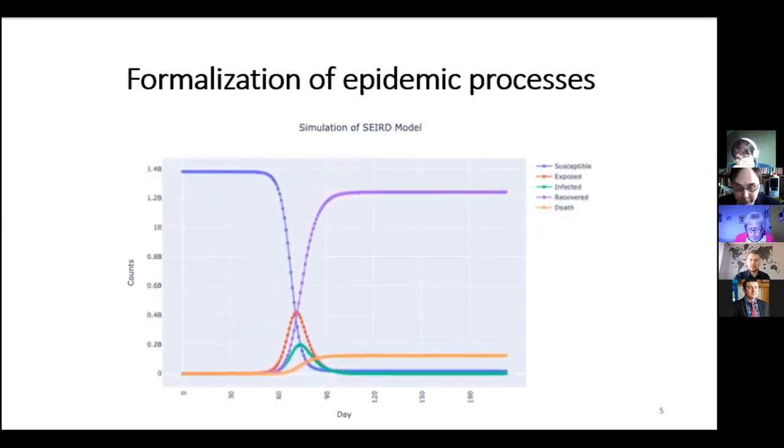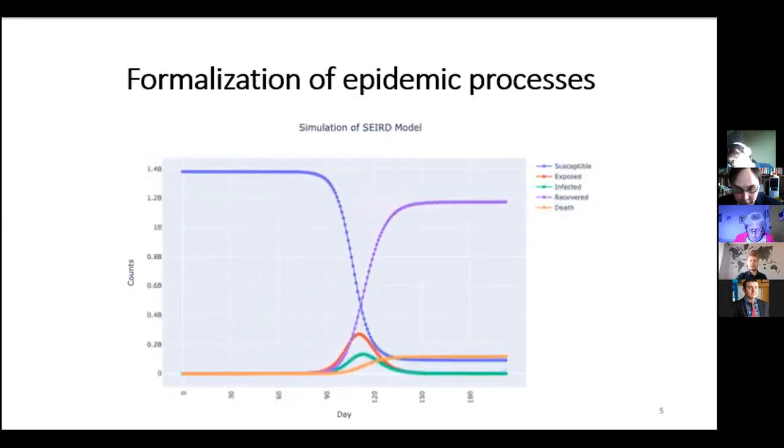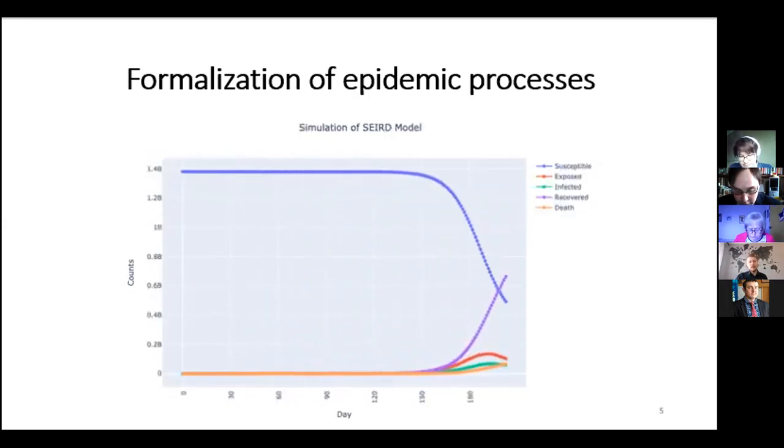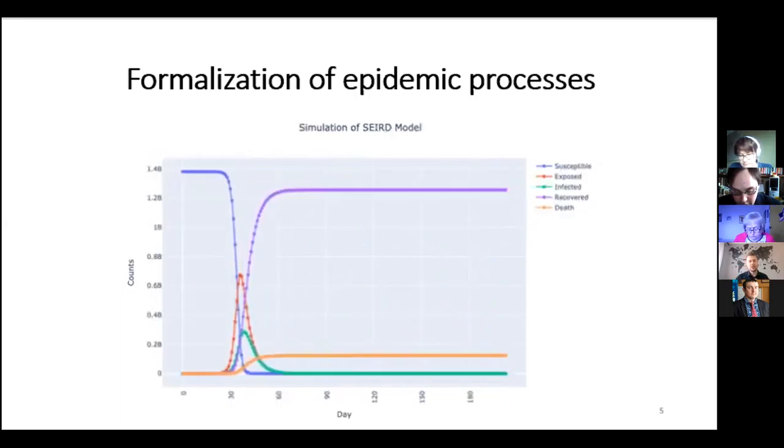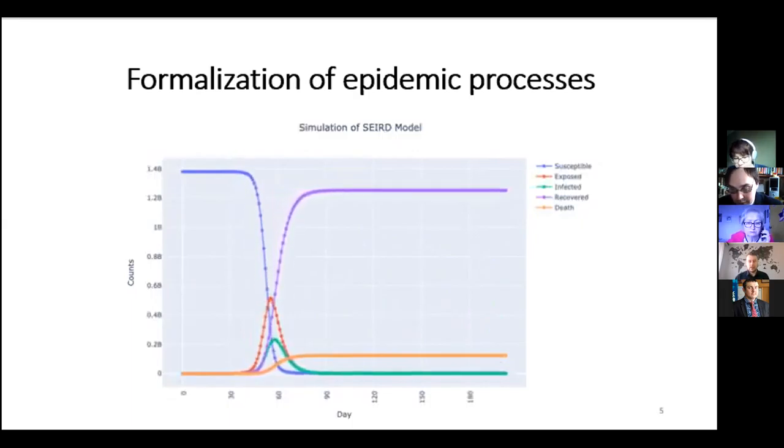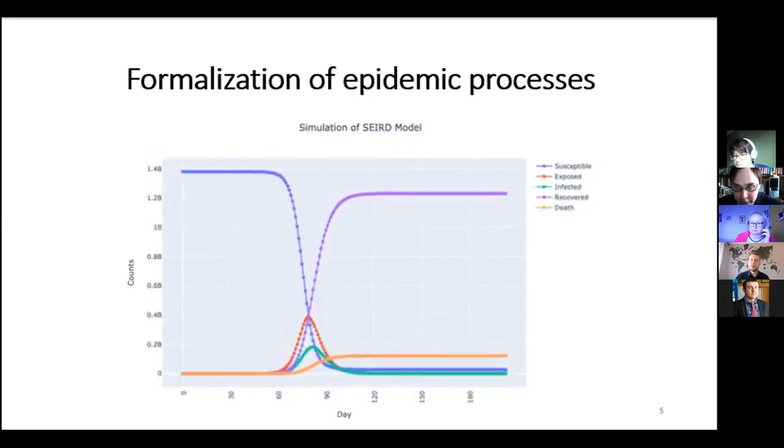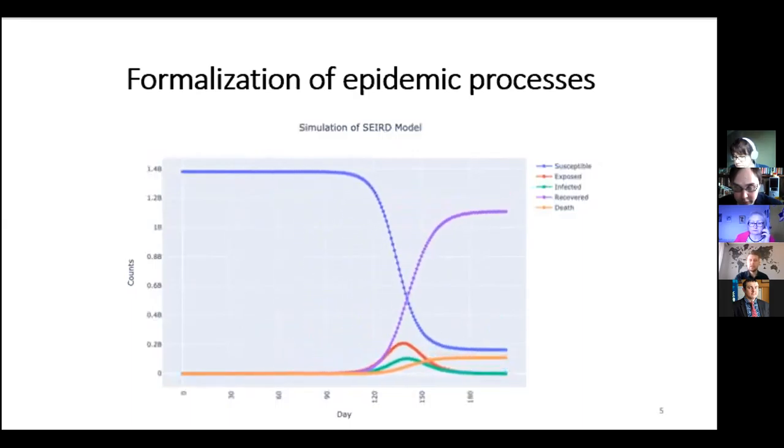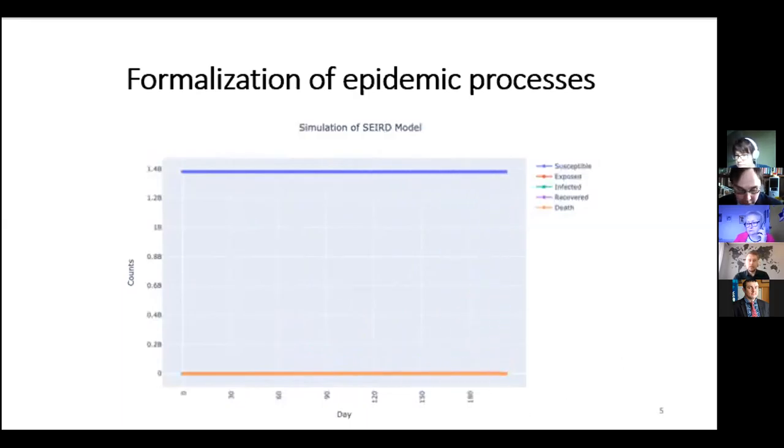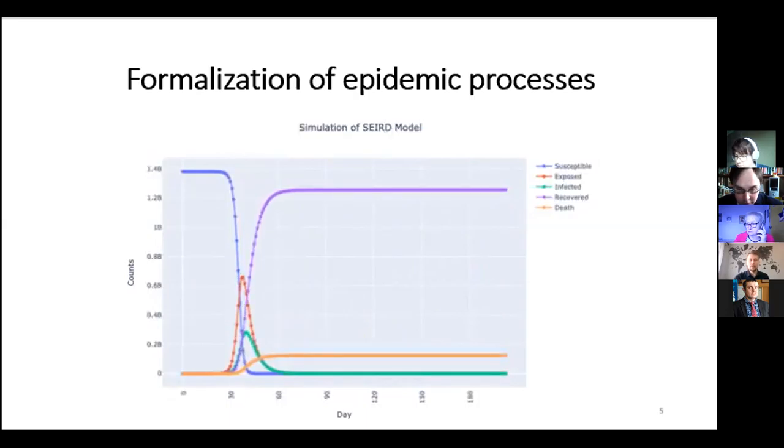The basis for the prevention of infectious diseases on a national scale is an increase in the material well-being of the population, the provision of quality water and food, quality housing, qualified medical care available. To prevent the intensification of the epidemic process of infectious diseases, it's necessary to determine the driving forces, characteristics of a certain time and a certain territory.